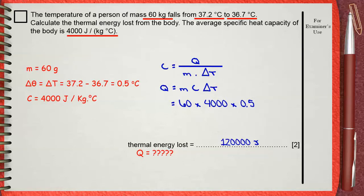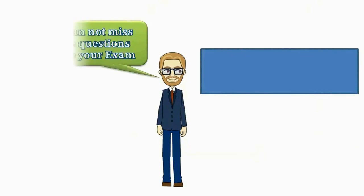The mark scheme gives one mark for the use of the rule or the substitution and one mark for the final result.